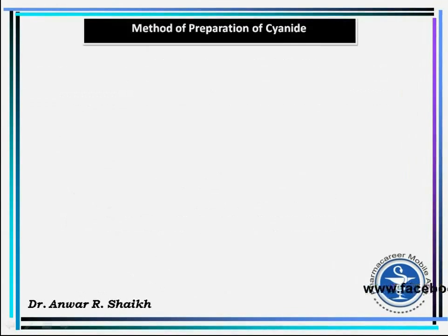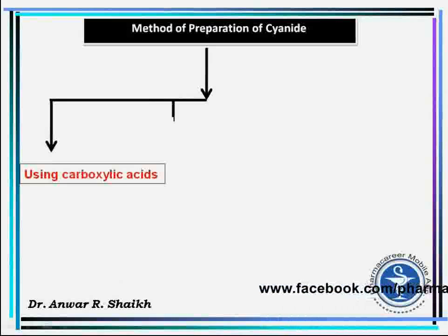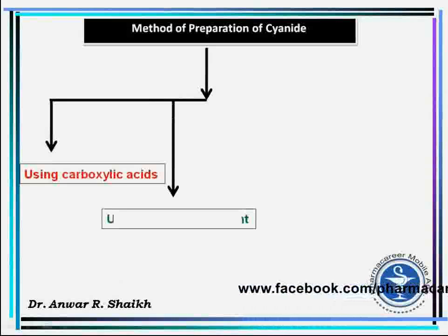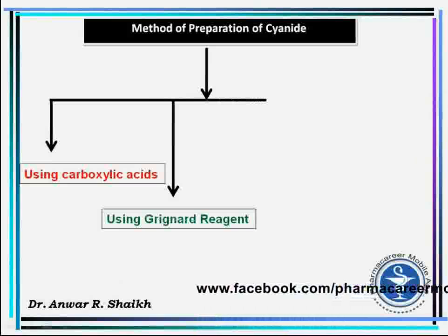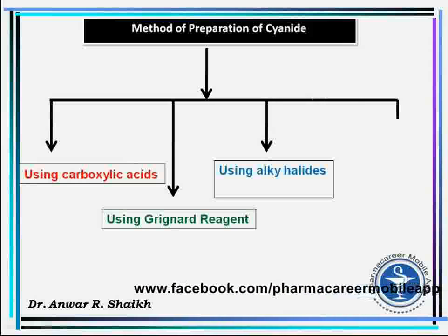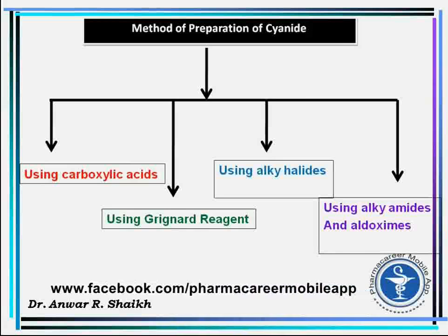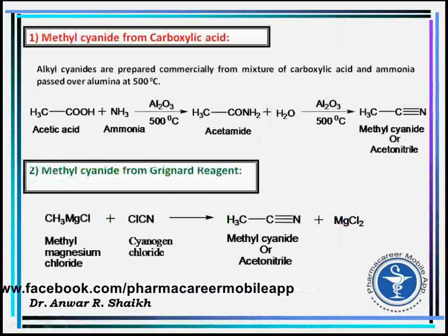Methods of preparation of cyanide: first, using carboxylic acid; second, using Grignard reagent; third, using alkyl halides; and fourth, using alkyl amides and aldoximes.